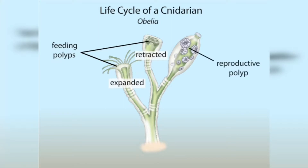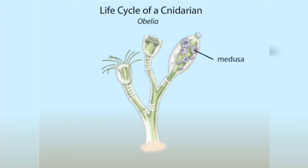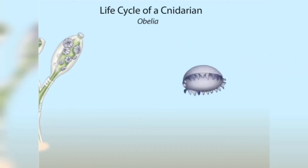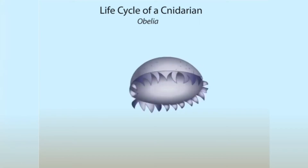The reproductive polyp produces, by asexual means, tiny Medusa body forms. These Medusae grow and bud off from the parental tissue. The Medusae nearest the tip of the polyp are the most mature and are the first to leave the parent animal. Because they can swim, the Medusae help disperse the species in the sea.